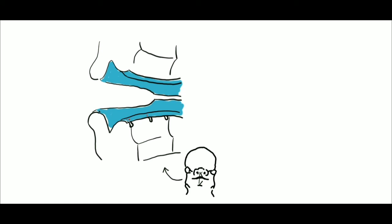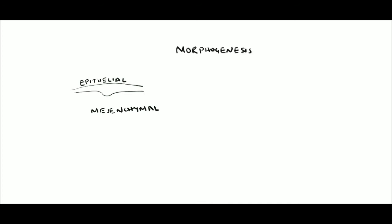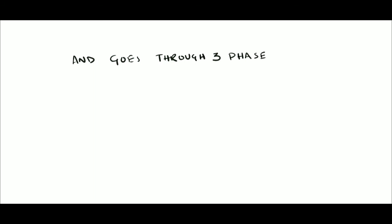These localized enlarged projections within the dental lamina are known as dental plicoids. As these plicoids proliferate, the tooth undergoes morphogenesis, which results in different teeth shapes. This is guided by the interaction between the epithelium and mesenchymal tissues, progressing to three distinct stages: the bud stage, cap stage, and bell stage.